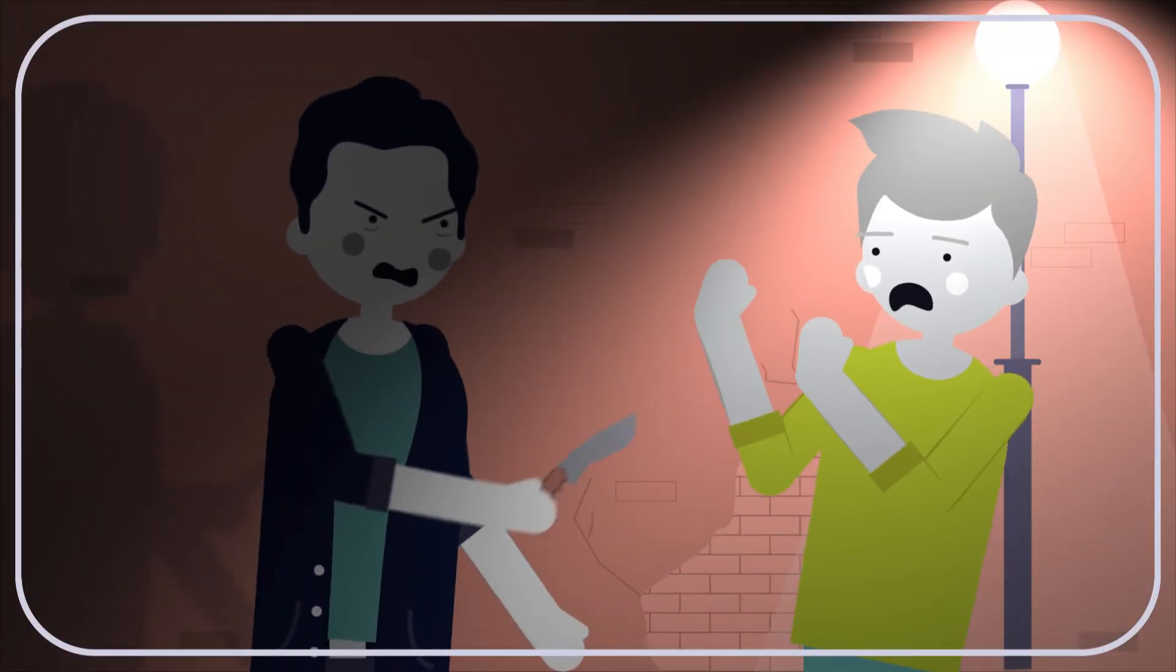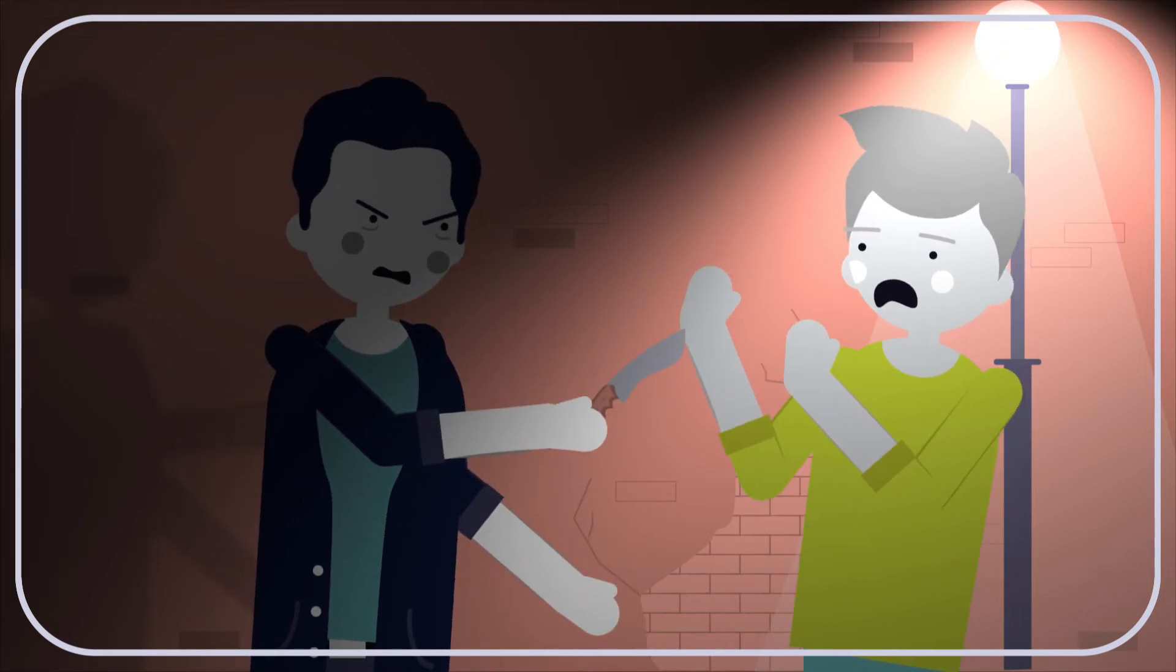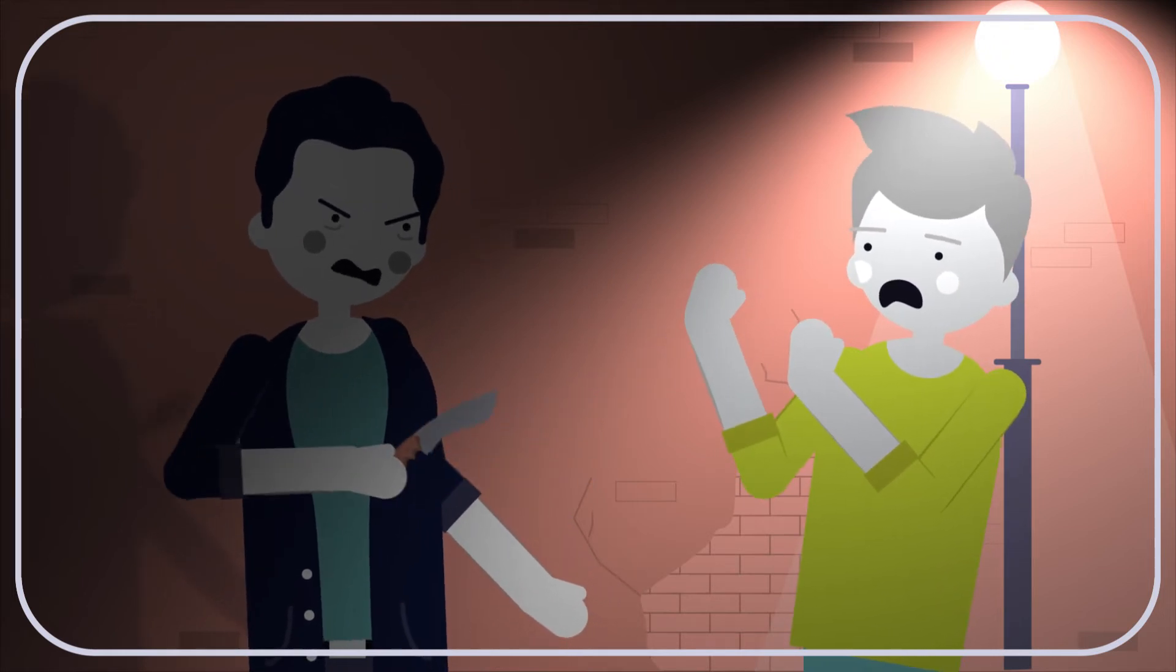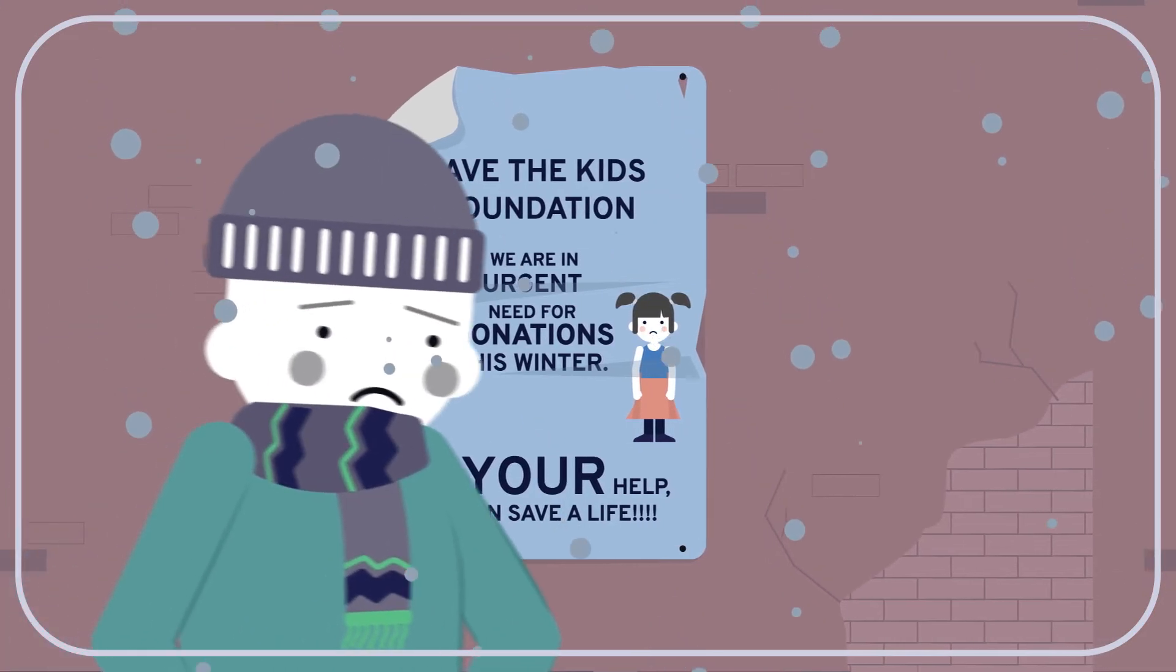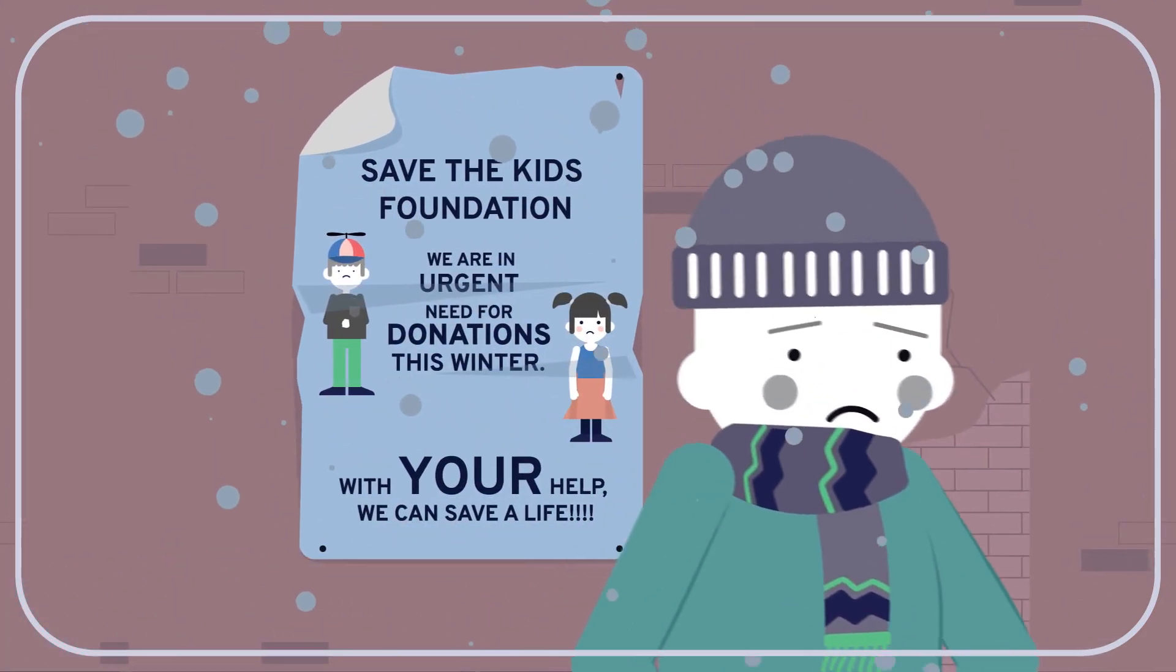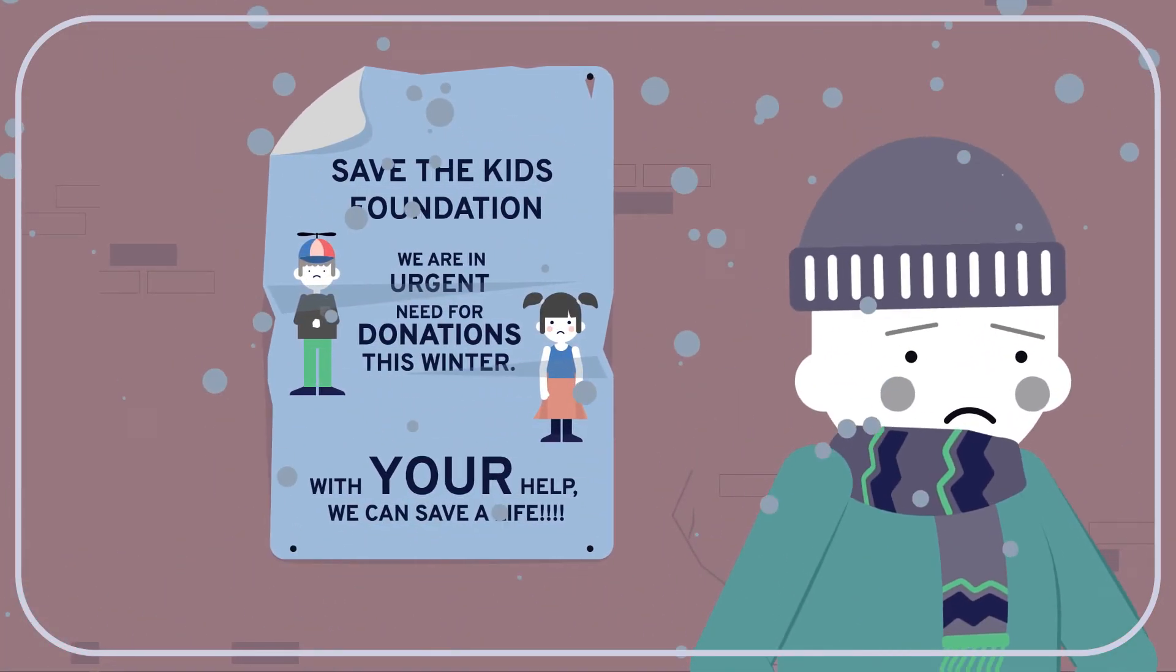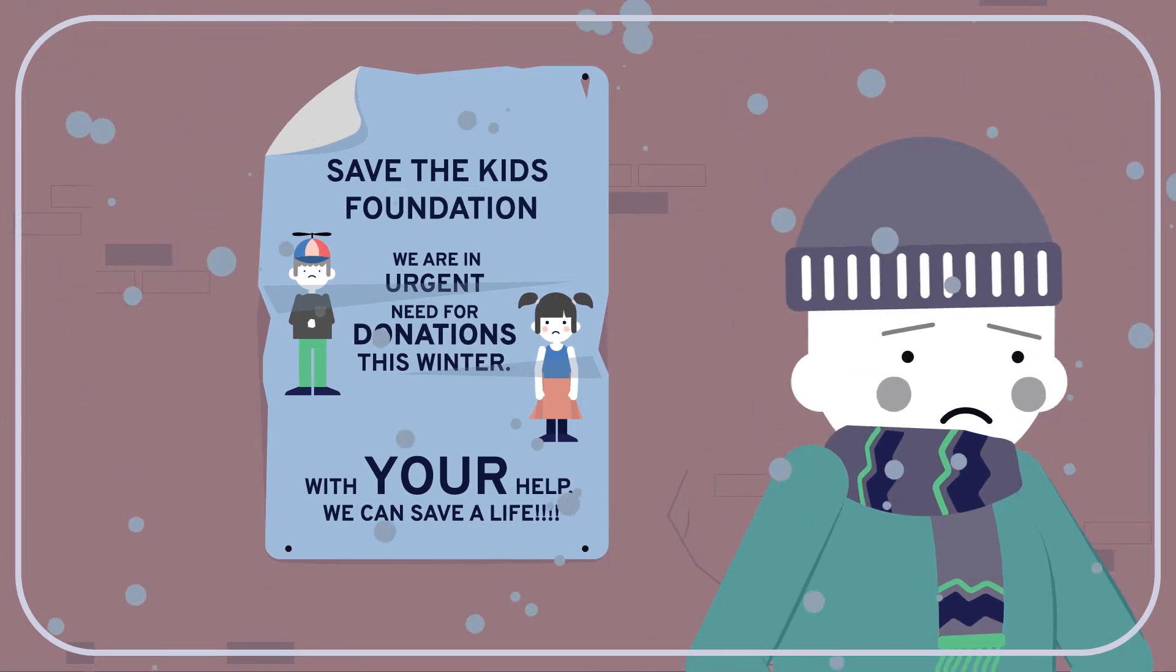Intentionally killing someone who isn't threatening you and doesn't otherwise deserve to die is absolutely wrong, no exceptions. The ethics of letting someone die, though, is less straightforward. After all, people die all the time, and we can't try to save everyone.